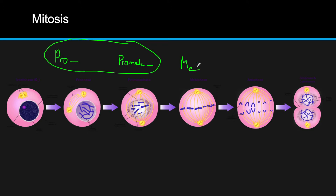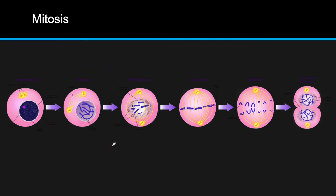Next we have metaphase — think 'M' for middle. The chromosomes are aligning at the equator of the cell. The centrosomes have moved to the ends of the cell, and the microtubules attach to the centromeres — the connecting region between the two sister chromatids. The spindles attach to these centromeres and pull on them to confirm alignment is correct, but they won't pull the chromosomes apart yet.